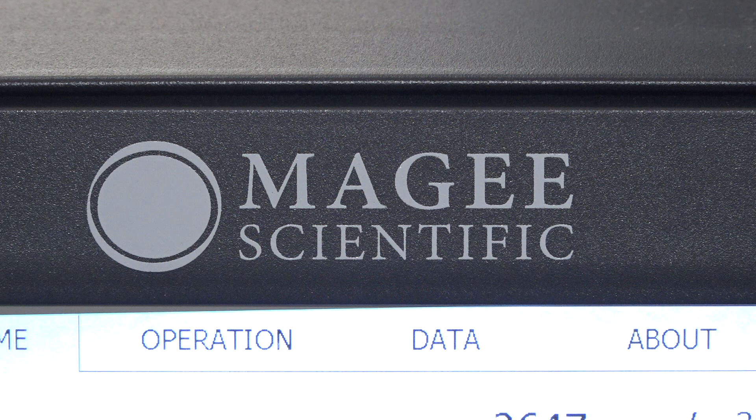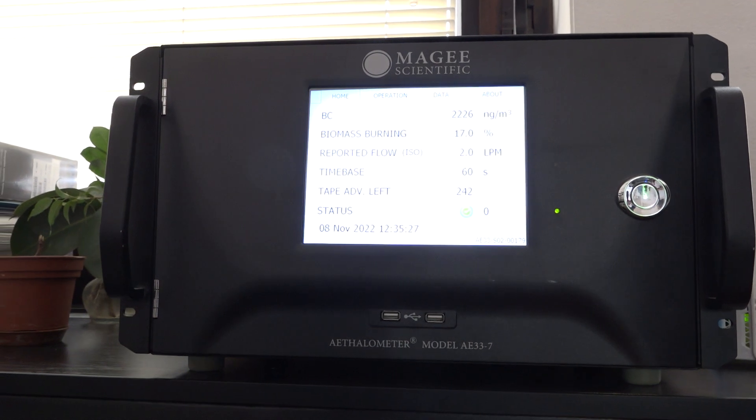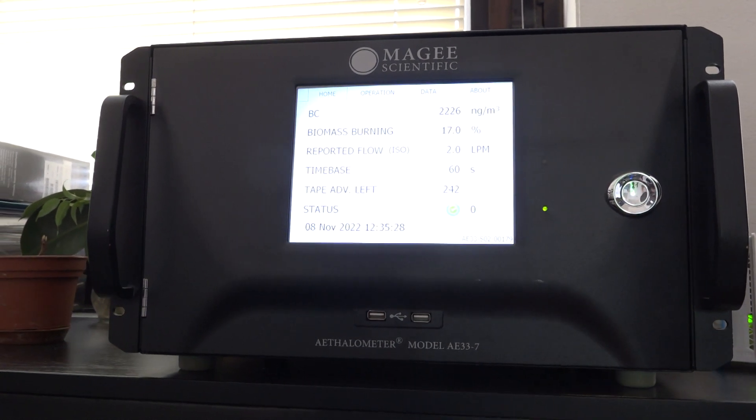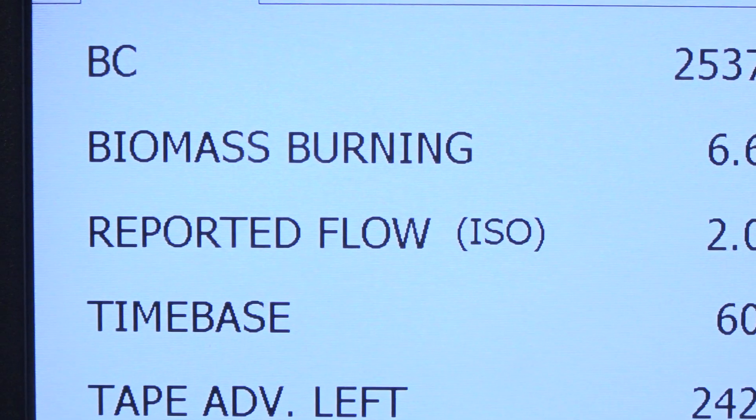Tu simultano imamo merenja u realnom vremenu u Ljubljani, Zagrebu, Sarajevu i Beogradu. Koleginica, koordinator projekta je dr. Katja Džepina, koja radi na univerzitetu u Novoj Gorici. A firma Aerosol, to je američka kompanija koja proizvodi instrumente za merenje crnog ugljenjika u realnom vremenu, ali takođe i drugih parametara atmosferskog aerosola.